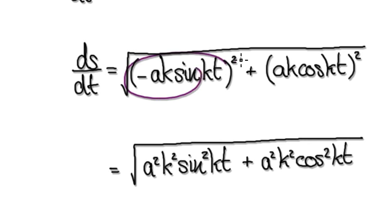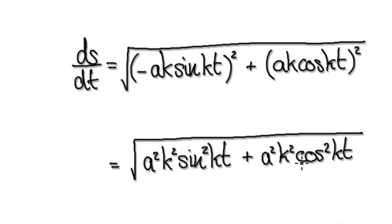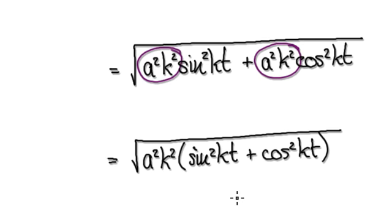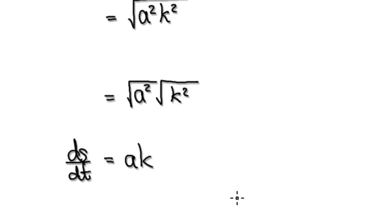Now when you square this whole thing here, the minus disappears, giving you this. Then factorize a-squared k-squared out, and it would give you this. The speed would be given by ak.